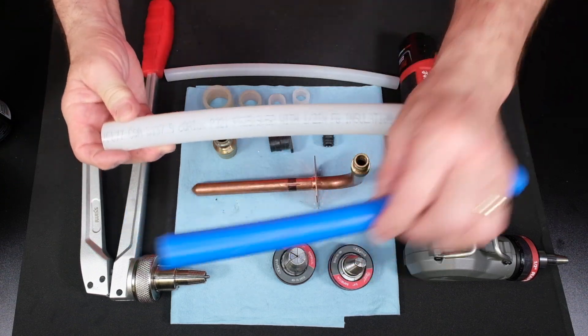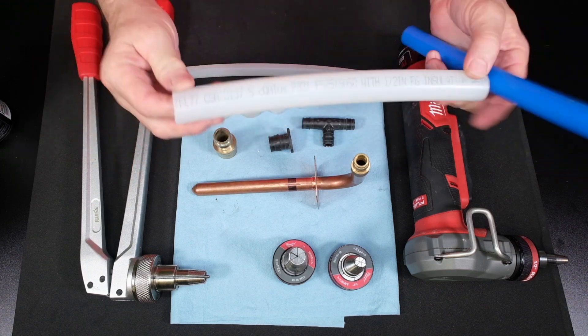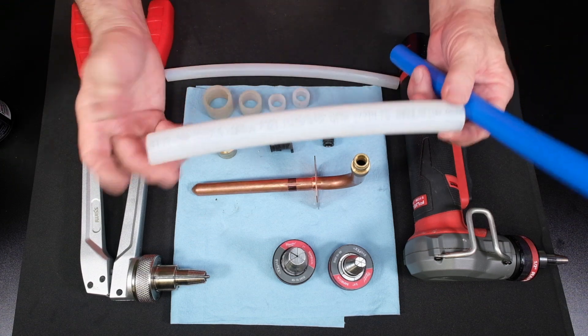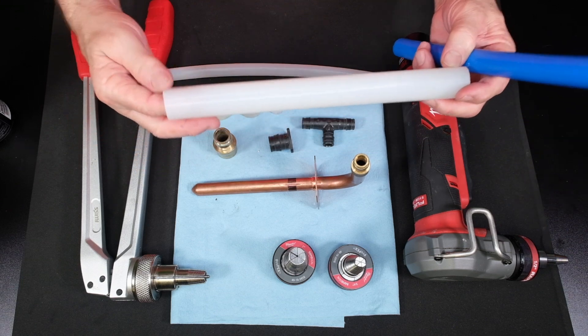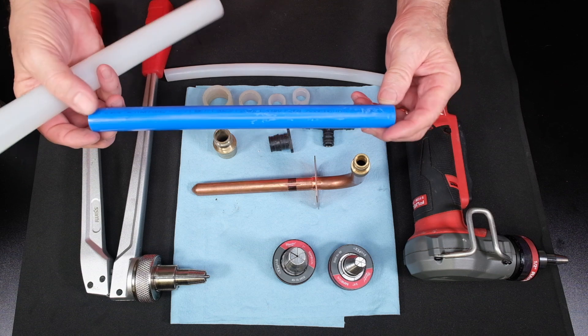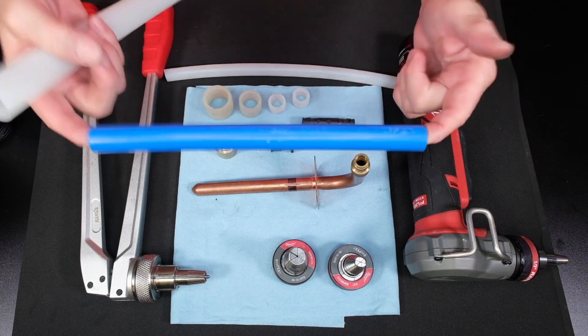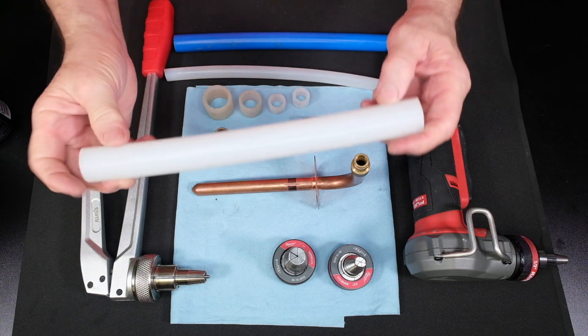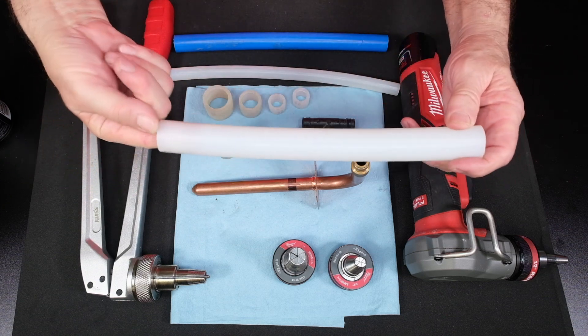Usually, PEX-A is somewhat translucent. Not always, but you can kind of see through it. Not so with the PEX-B. PEX-B is generally darker colors. Even on the white, it's pretty solid white. When I say translucent, as I said, you can almost see my finger through it.